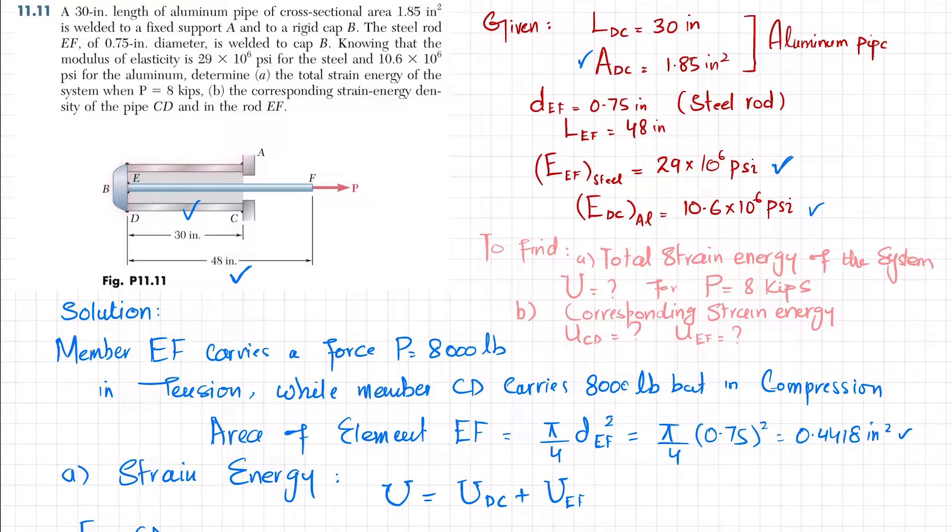The steel rod EF of 0.75-inch diameter is welded to cap B using a rigid cap. The modulus of elasticity is 29 × 10^6 psi for steel and 10.6 × 10^6 psi for aluminum.